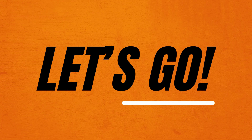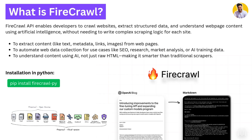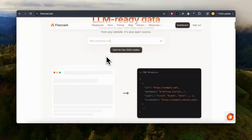Let's create these two projects. First, let me tell you about the Firecrawl API. The Firecrawl API enables developers to crawl websites, extract structured data, and understand webpage content using artificial intelligence without needing to write any complex scraping logic for each site. It is used to extract content like text, metadata, links, and images from web pages. It automates web data collection for uses like SEO research and market analysis, understanding content using AI — not just raw HTML but the actual content on the site. You can install it using pip install firecrawl-py.